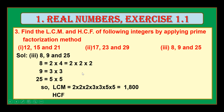Now, HCF — there is no common factor among 8, 9 and 25 except 1. Therefore, HCF of these numbers is 1. You can observe that 8, 9 and 25 are not prime numbers, yet they have no common factor except 1. Such numbers are called co-prime numbers. Therefore, HCF of co-primes is always 1, and the LCM of co-prime numbers is the product of the numbers.